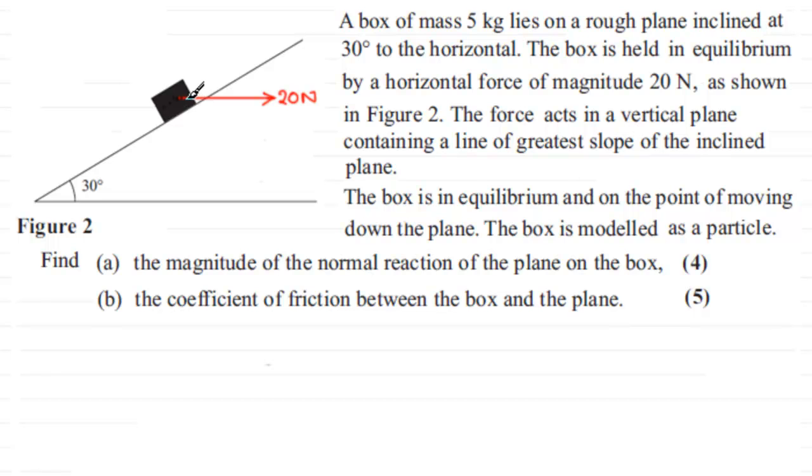What else have we got acting on the box? Well, we've got the weight. The weight acts downwards. It normally is mg. In this case the mass is 5 kilograms. So we're going to have 5g newtons then.